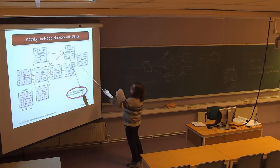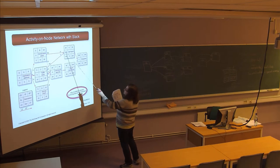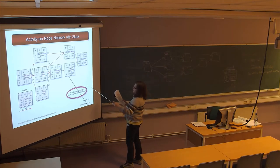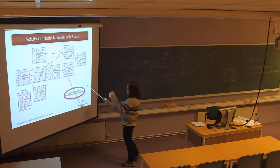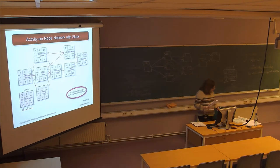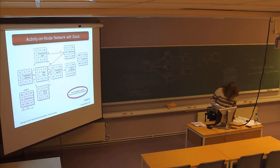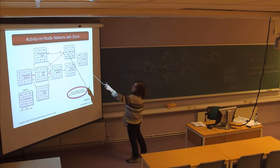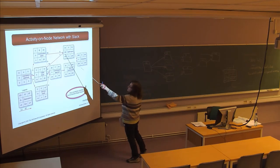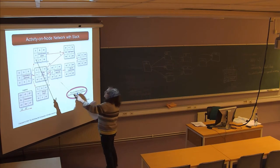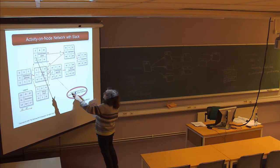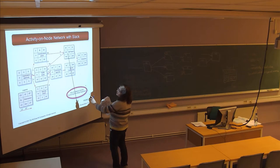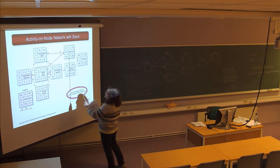Here we have a total slack of 165, and the total slack at another node is zero. So the free slack here is also 165. But the free slack at a preceding node in the chain is zero, because it's part of the chain. The only place there's free slack is at the end of the chain of a series of events.